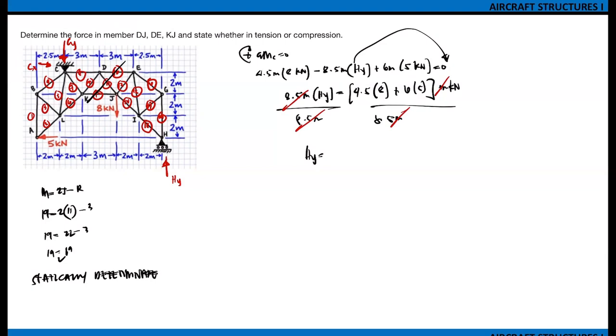7.764705882 kilonewton, or store A. Next is summation forces X equals 0. Going right is positive. We have negative 5 kilonewton and then positive C sub X equals 0. Therefore, C sub X equals 5 kilonewton.